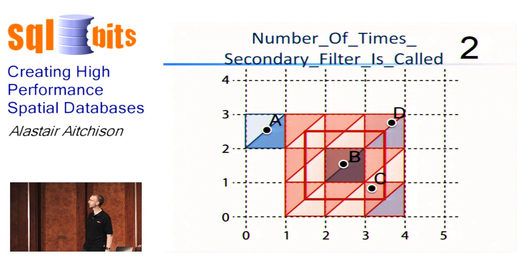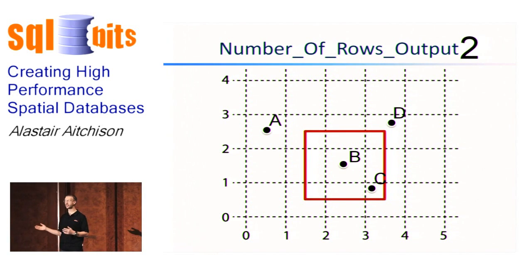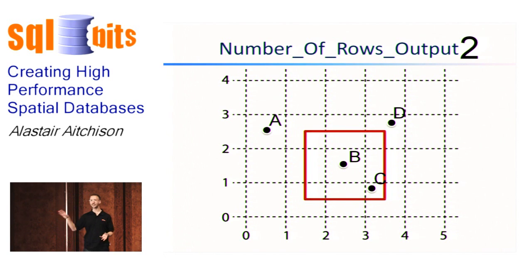That leaves us with the remaining two points, C and D, that we're not sure, based on the primary filter alone, if they're inside or outside the polygon. Let's call the secondary filter. The secondary filter is essentially the ST intersects method itself, and that's going to compare the individual point sets of the geometry to come out with the right result. So there's two rows output: the two rows of B and C. We knew that at the start. It was obvious to us they're contained in the polygon, but that's how SQL Server processes it.